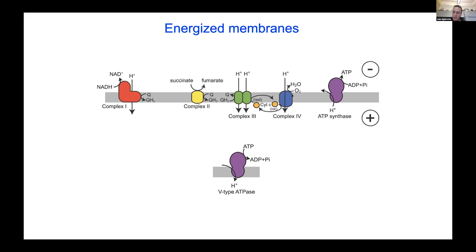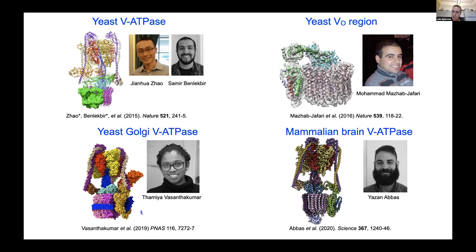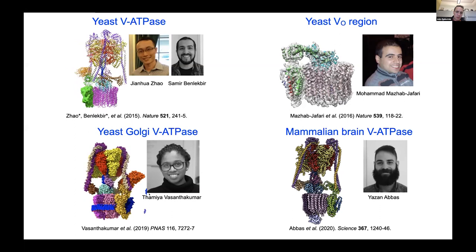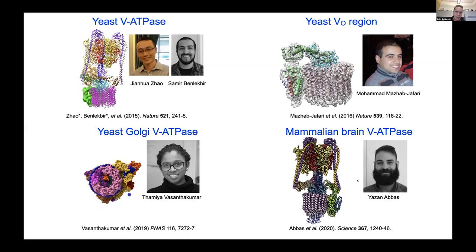I can't tell you too much about what we've done with V-ATPases, but I want to give a quick overview of some recent structures: the work of Jin Wa Zhao, now at Sanford Burnham, separating different conformations through the rotary catalytic cycle; Muhammad Masab Jafari's first high-resolution structure of the membrane region of any rotary ATPase by isolating just the membrane-embedded region; Thamir Vasanthakumar studying dynamics and lipid modulation; and Yazan Abbas determining the first structure of a mammalian brain V-ATPase. These structures and techniques have informed all our other work.